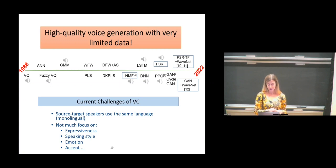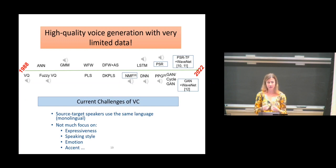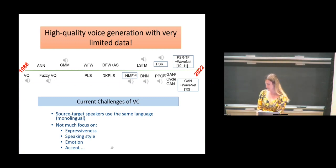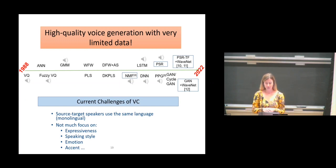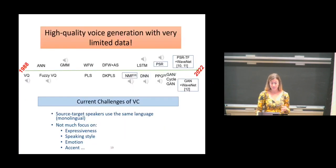In addition to that, there is not much focus on expressiveness, speaking style, emotion, or accent. If you have source and target speakers with very different speaking styles, just mapping spectral features is not enough — you need to modify the duration and other aspects too. Those are all current challenges of voice conversion. Regarding accent: when I was in Singapore, we were building speech synthesis models for public use — for MRT metro systems and buses — and you cannot just generate British English because people wouldn't understand. They have a particular Singaporean accent that needs to be modeled.